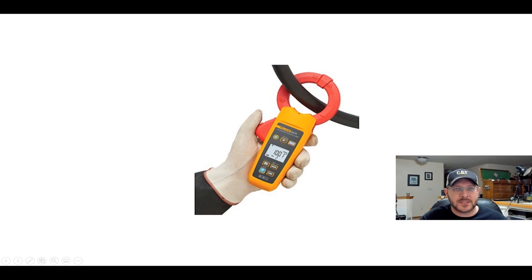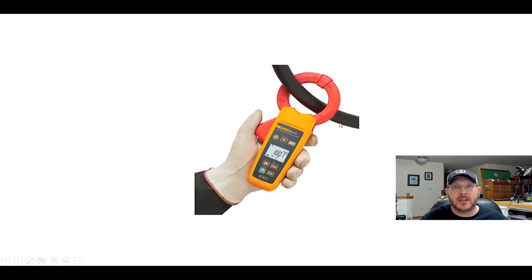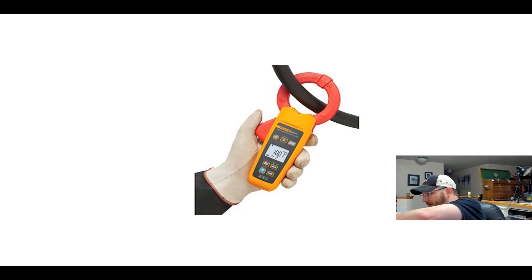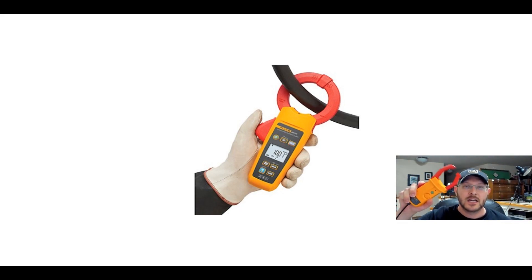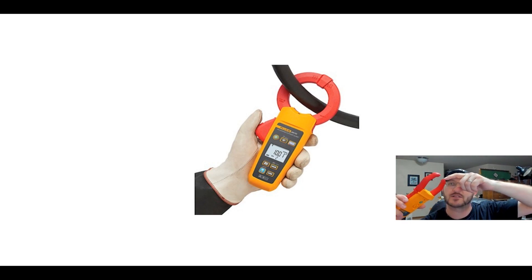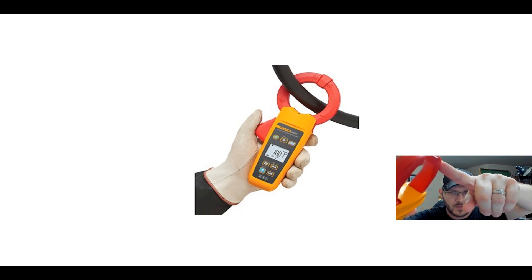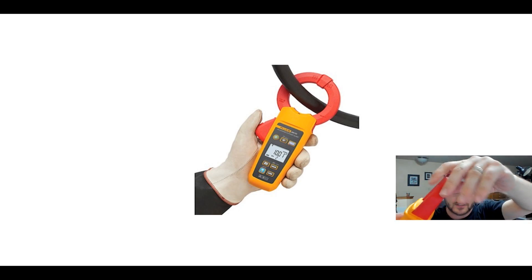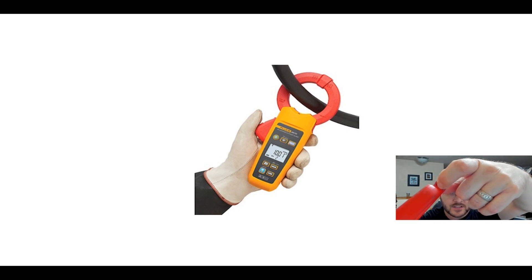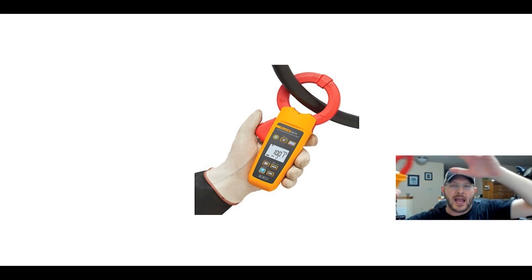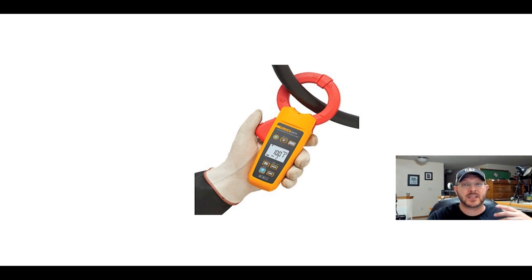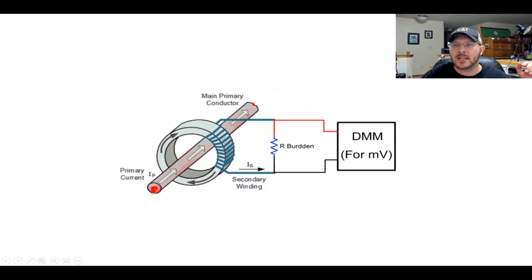What you've probably seen before is what's also called a current clamp — I have one right here. You just open it up; this is basically a split core because it splits the core. If you look inside there is an iron core in the middle, and that's basically what it is — a wire wrapped around an iron core, kind of like a transformer.